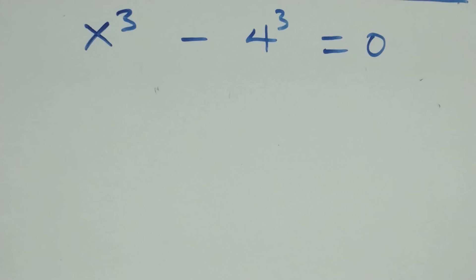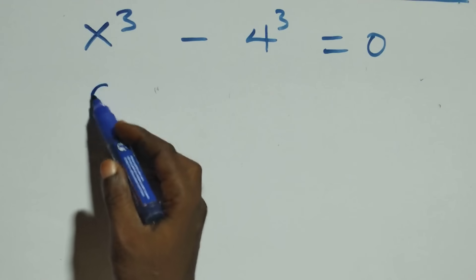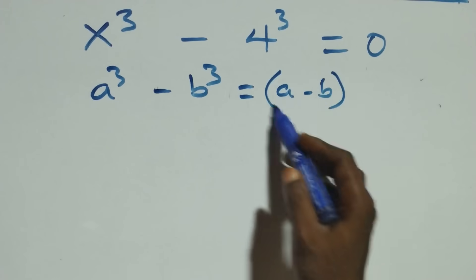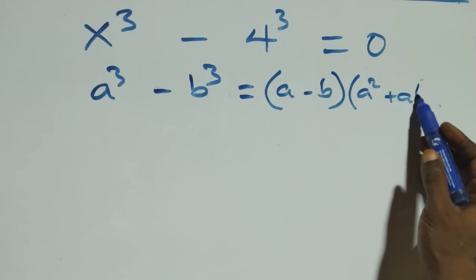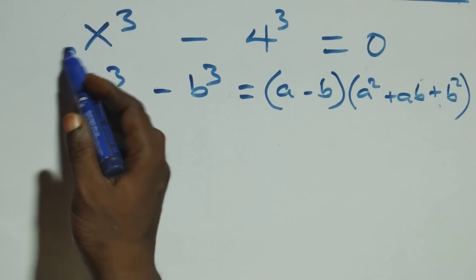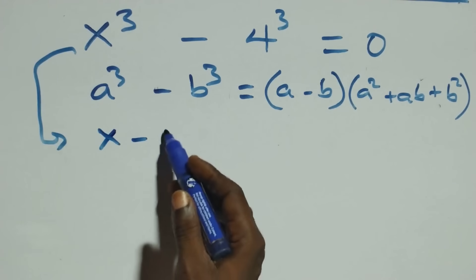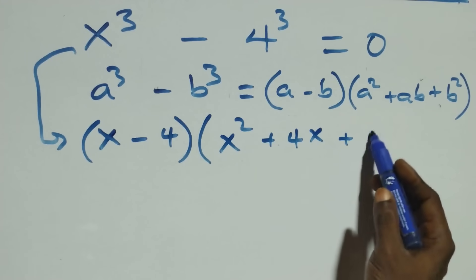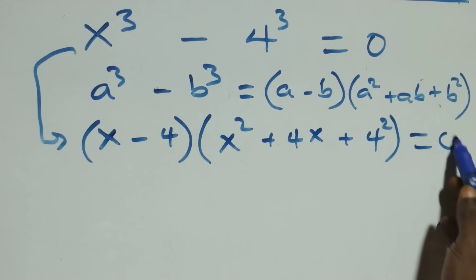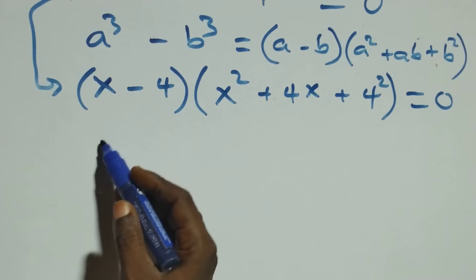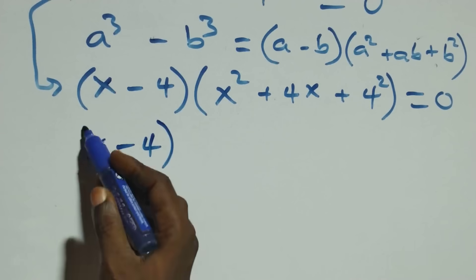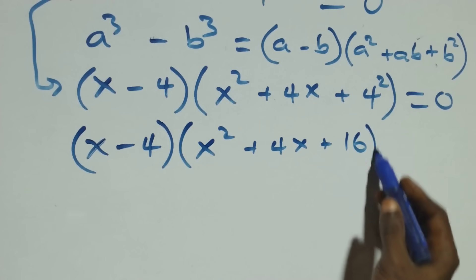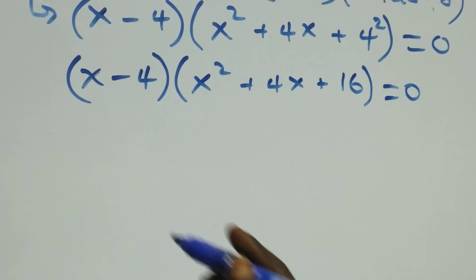Solving from the second case, this follows the difference of cubes identity: a cubed minus b cubed equals (a minus b)(a squared plus ab plus b squared). So this becomes (x minus 4)(x squared plus 4x plus 4 squared) equals zero, that is (x minus 4)(x squared plus 4x + 16) equals zero.